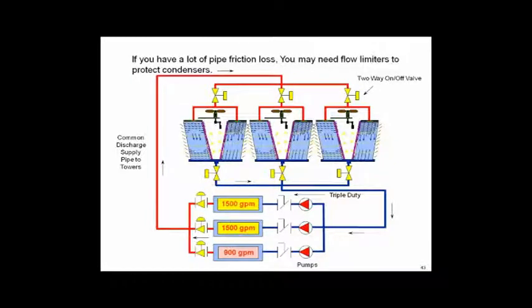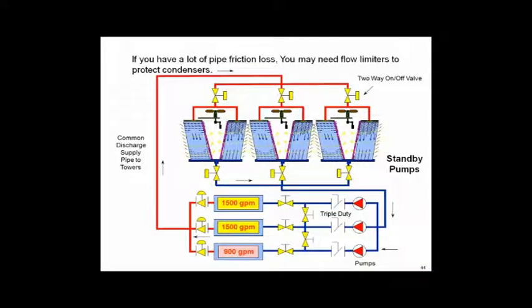How about parallel pumping? Here I've got three pumps together with a common discharge to all three condensers, rather than one dedicated pump per condenser. If I turn one pump off, I still have flow going through all condensers. For parallel pumps I want all three to be the same size — 1,500 GPM each. Could I put a 900 GPM pump in parallel? Yes, but it's living on the edge. With parallel pumping, if I turn a chiller off but don't close a valve, flow still passes through it — so I must add a two-way on/off valve on each chiller.